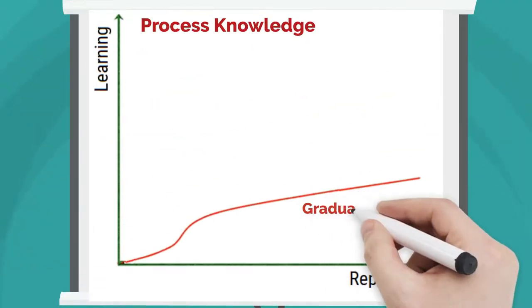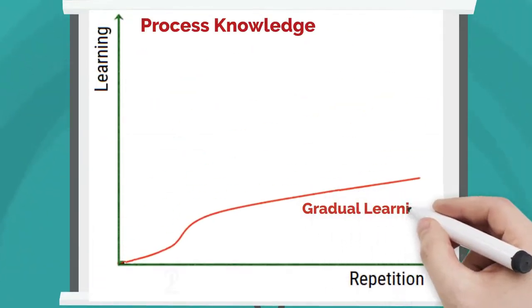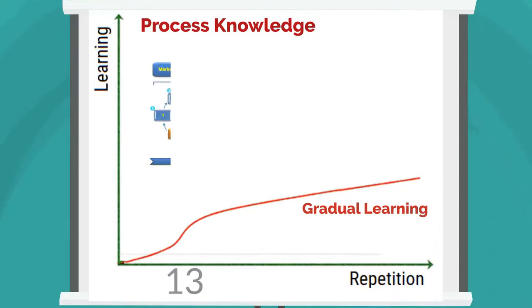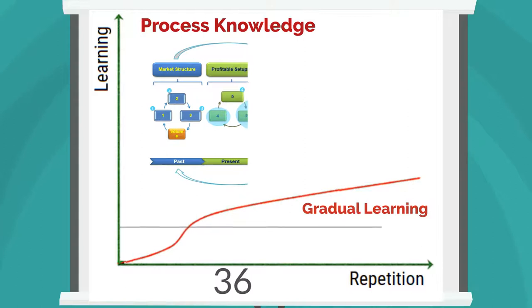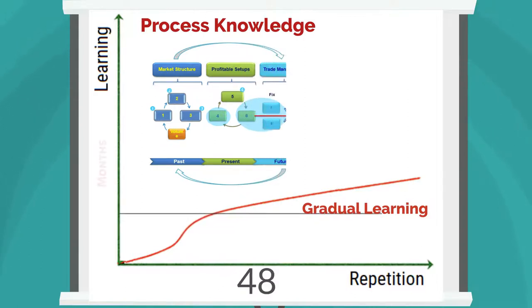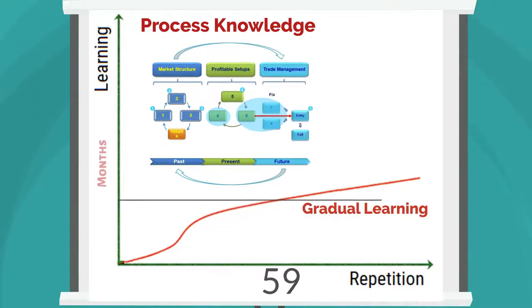The learning curve of process knowledge is gradual. It requires more time and repetition in order to turn it into a practical skill. The skills that are developed by practice become a person's habit and are executed automatically and correctly without thinking.